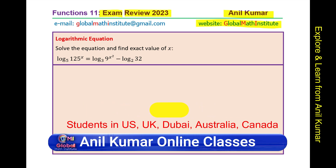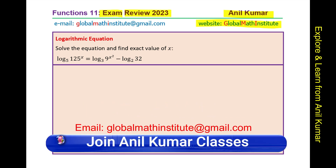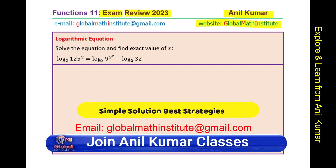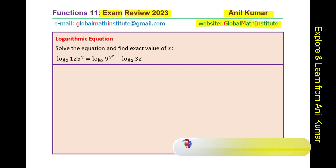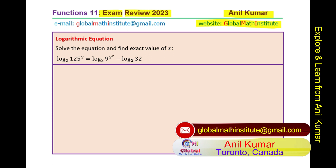The first question is: log to the base 5 of 125 to the power of x equals log to the base 3 of 9 to the power of x squared, minus log to the base 2 of 32. We have different bases to work with, making this a slightly complicated question.